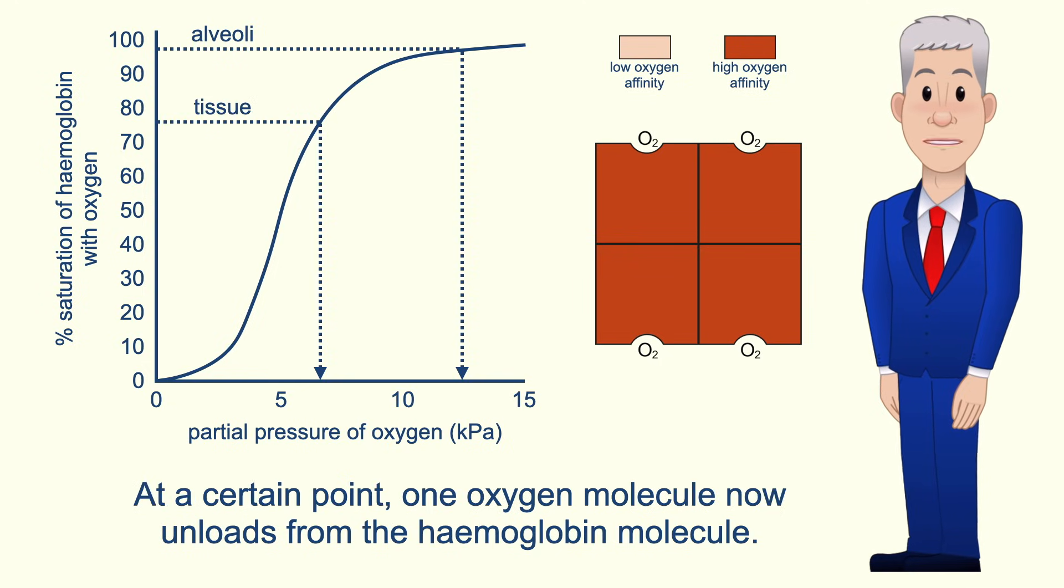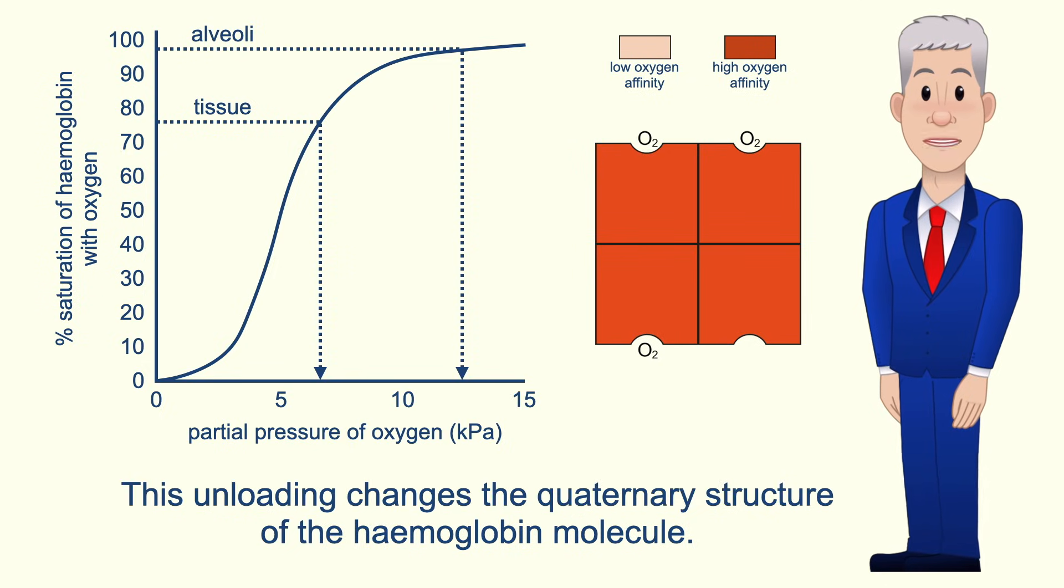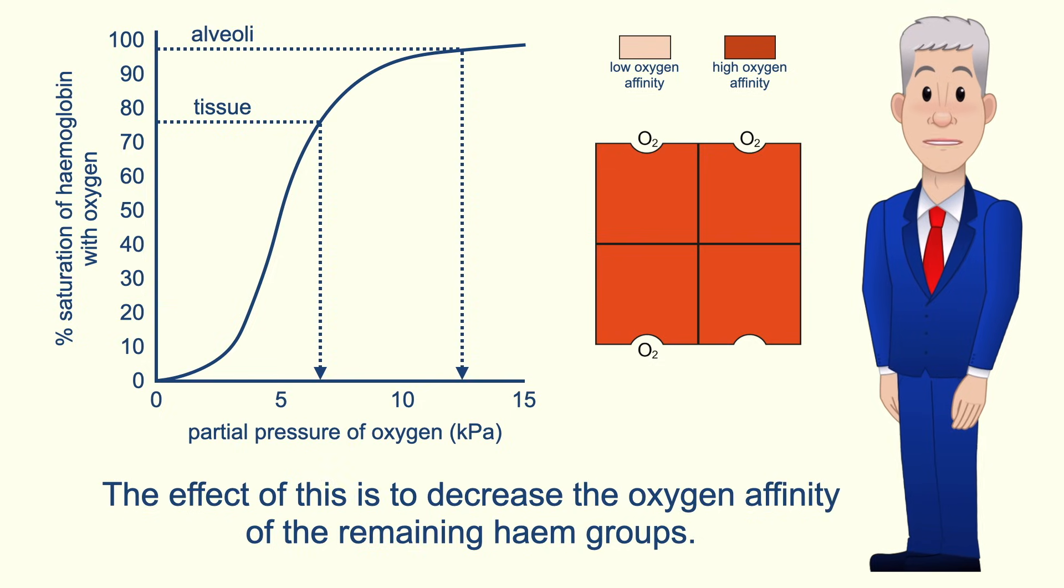At a certain point, one oxygen molecule now unloads from the haemoglobin molecule. This unloading changes the quaternary structure of the haemoglobin molecule and the effect of this is to decrease the oxygen affinity of the remaining haem groups.